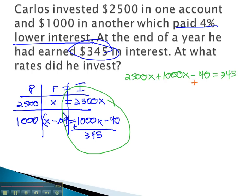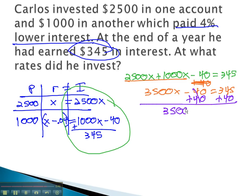Start solving by adding 40... whoops, how about we combine like terms first? 3,500x minus 40 equals 345. Now we'll add 40 to both sides. 3,500x equals 385.